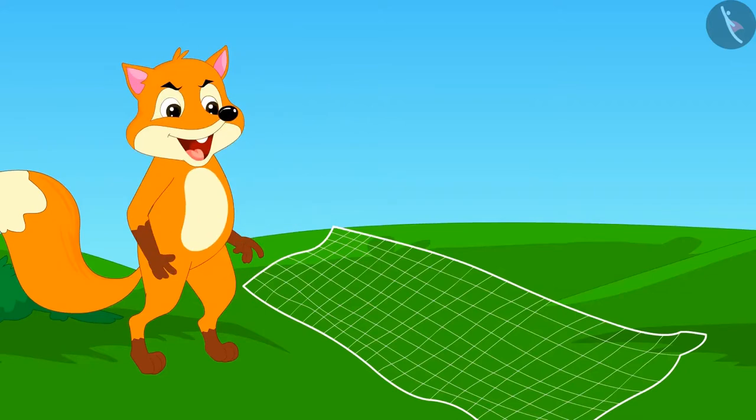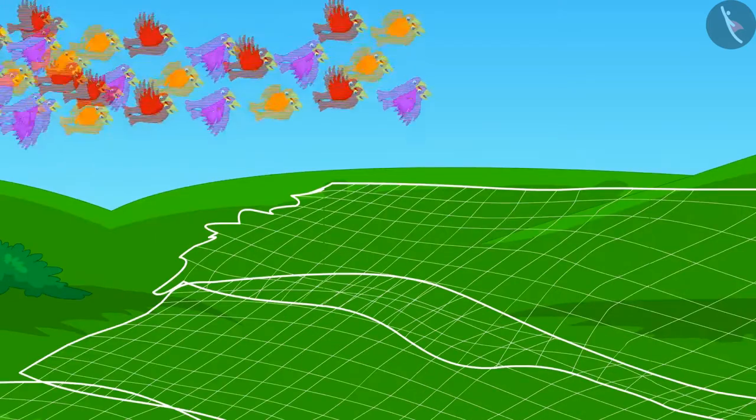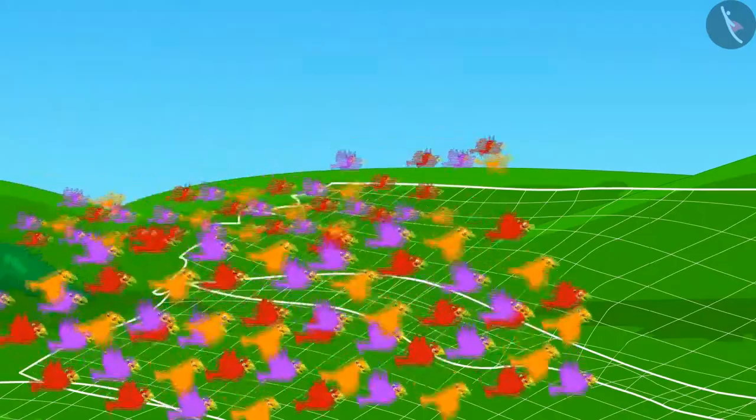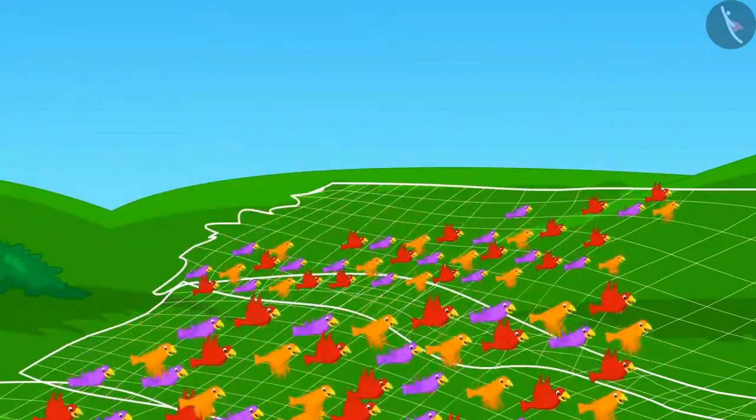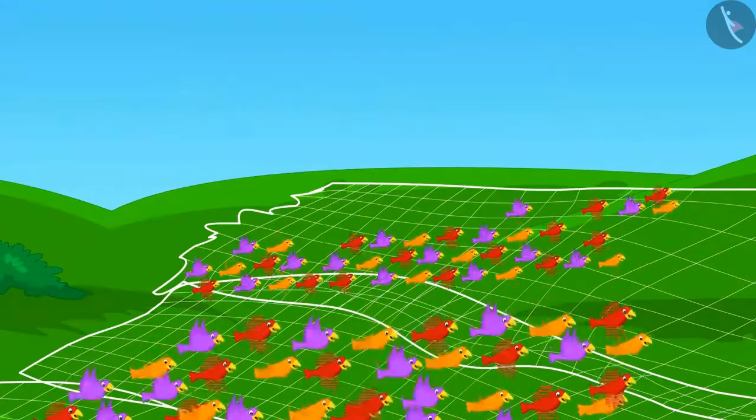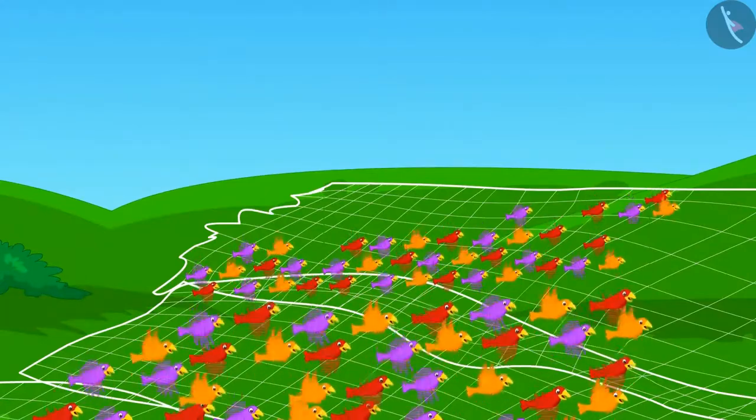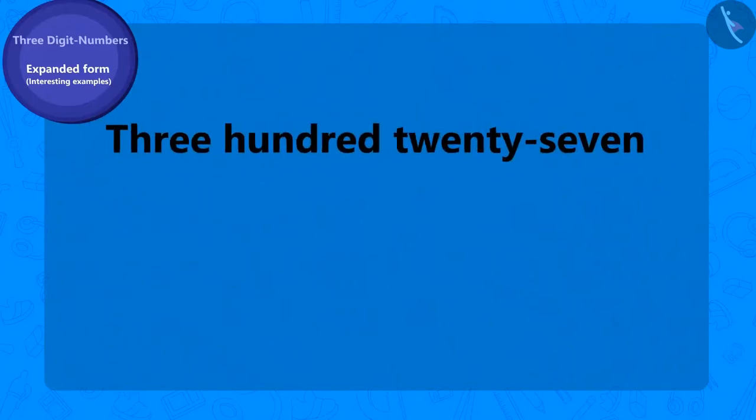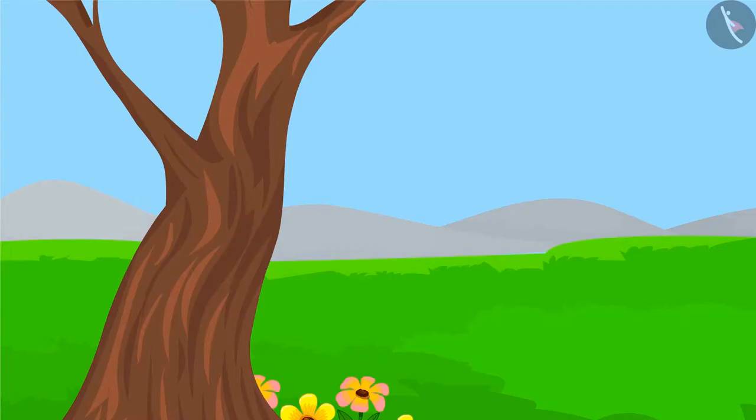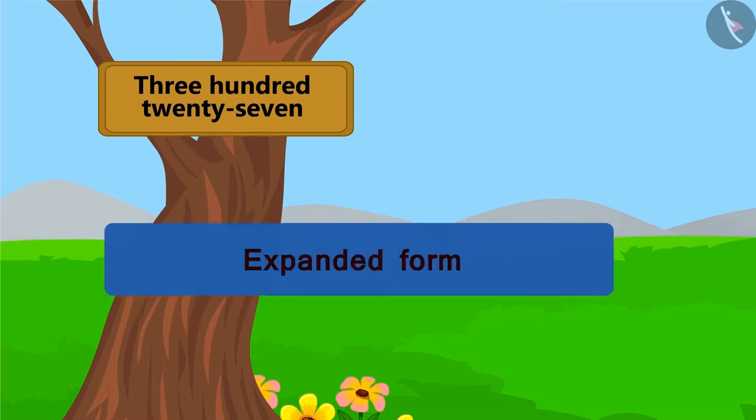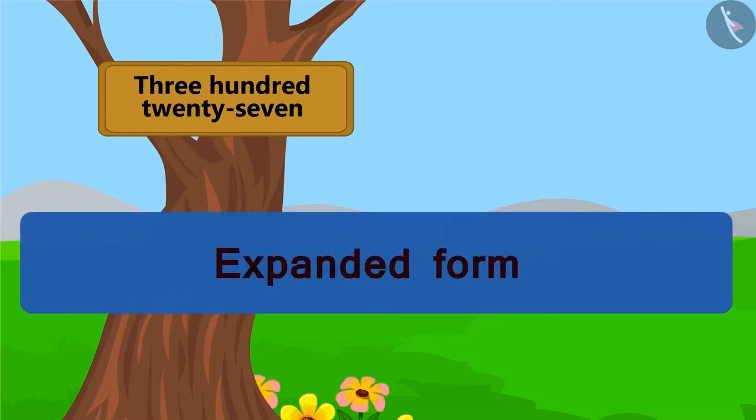The next day, it laid a net there. Like any other day, the birds came to feed on grains there, but they were caught in the net. Some of the birds thought that they will fly away taking the net with them. At first, 327 birds tried to fly away with the net. Let's see how we can write this number name in its expanded form.